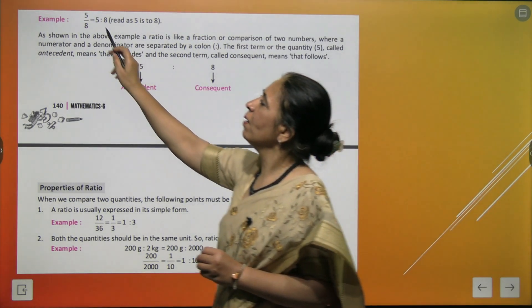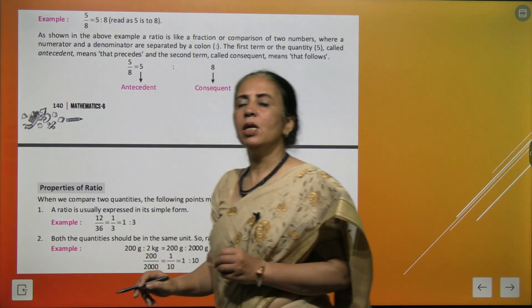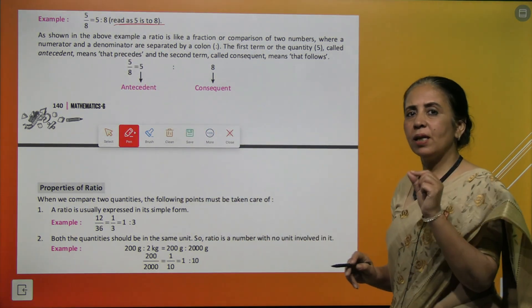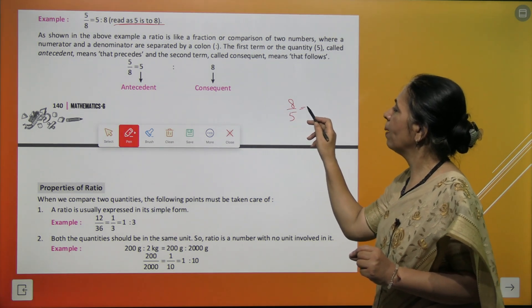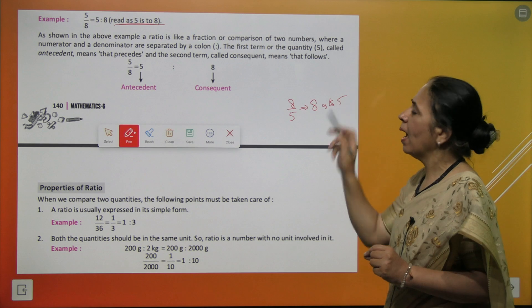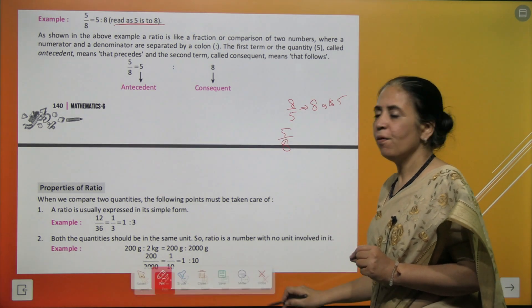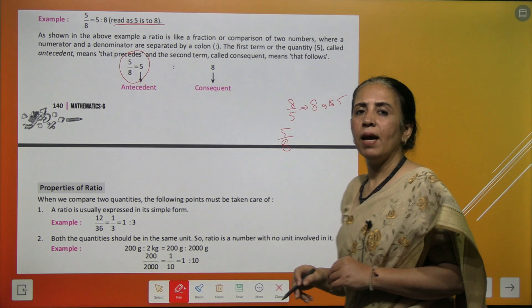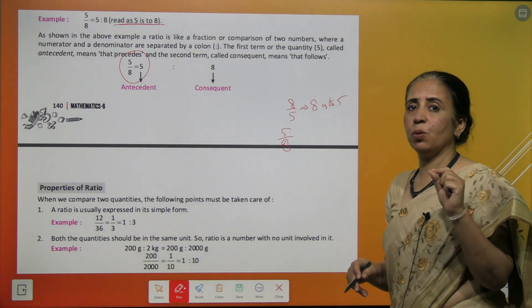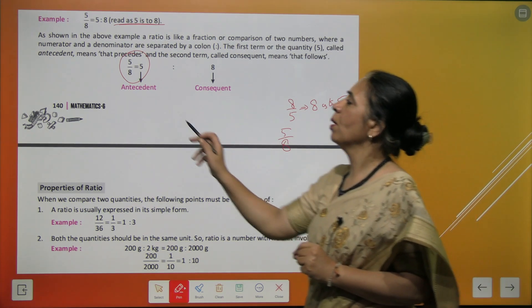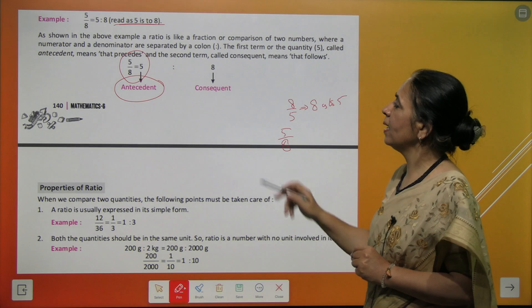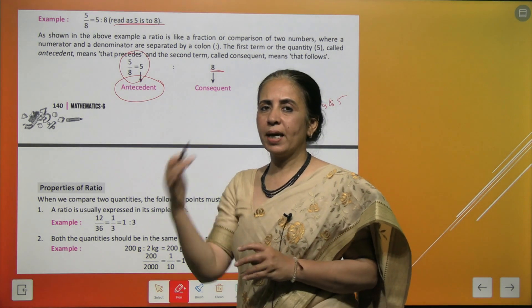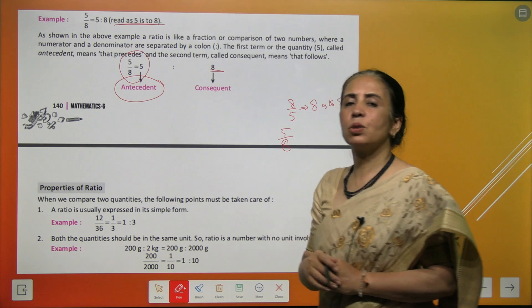How do we read a ratio? If we have 5 upon 8, we say it is read as '5 is to 8.' If we say 8 upon 5, it is '8 is to 5.' The first term is called the antecedent — so 5 is the antecedent — and the second term is called the consequent.